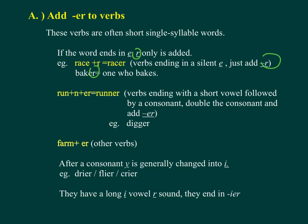Baker — one who bakes. Run + N + ER = Runner. Verbs ending with a short vowel followed by a consonant: double the consonant and add ER. For example: Digger. Farm + ER = Farmer.